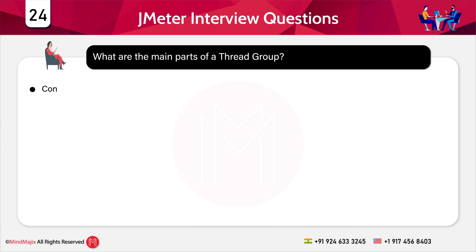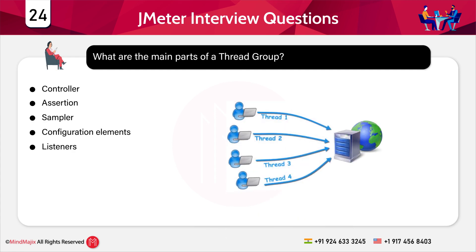The next question is: what are the main parts of a thread group? The main parts are: controller, assertion, sampler, configuration elements, and listeners. The controller controls the entire flow of the thread group. The assertion is responsible for time management — it checks whether the response is received within the specified time. The sampler sends different requests to the server. Configuration elements manage information related to requests to be integrated with samplers. Listeners save the final outcome of the run.